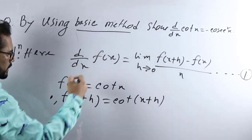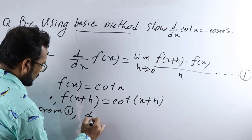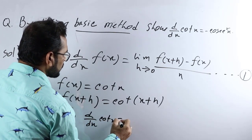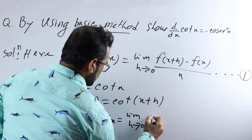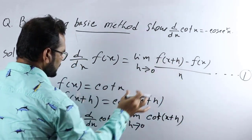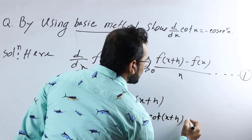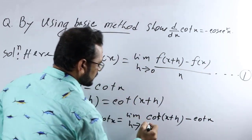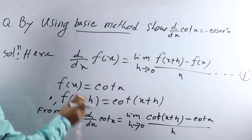Just put the value of f(x) and f(x+h) into equation number one. We will get: d/dx of cot x equals limit h tends to 0, cot(x+h) minus cot x, all divided by h.